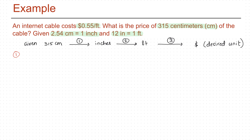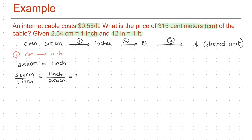In the first step, we convert centimeters to inches using the equivalence 2.54 centimeters equals 1 inch. We can write two conversion factors: 2.54 centimeters per inch, or 1 inch per 2.54 centimeters. Starting with 315 centimeters, we pick the conversion factor that cancels centimeters and introduces inches — that is 1 inch per 2.54 centimeters. The centimeters cancel, giving us 124.02 inches. At the end of the first step, we have the length of the cable in inches.